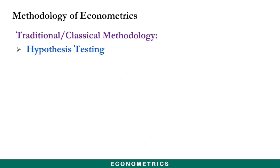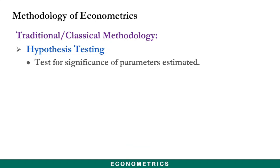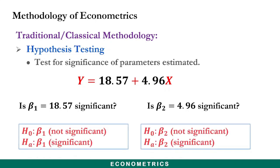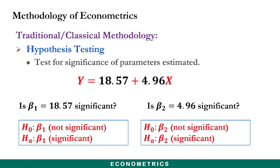After estimating the parameters, you conduct hypothesis testing to test for the significance of those parameters. You ask: is β₁ significant? Is β₂ significant? To answer these questions, you formulate a hypothesis and test it. The null hypothesis states that the parameter is not significant, while the alternative hypothesis states that it is significant. If you gather enough evidence to reject the null hypothesis, you can conclude the estimated parameters are significant.